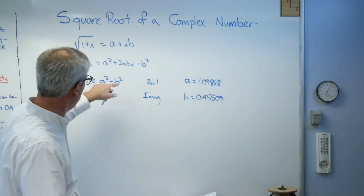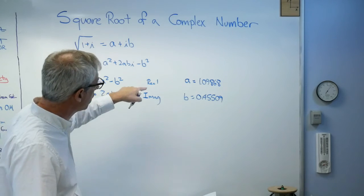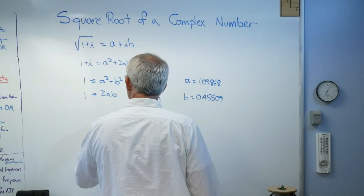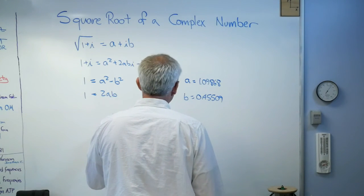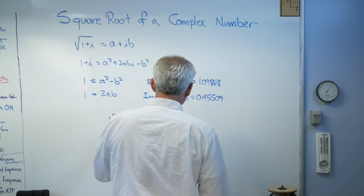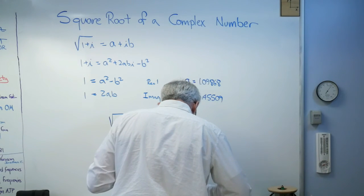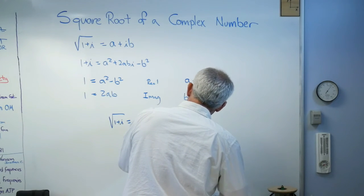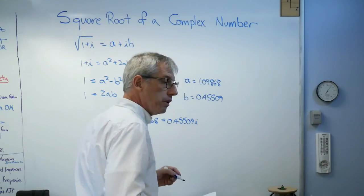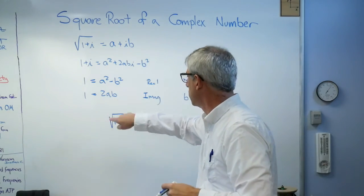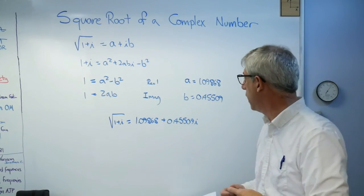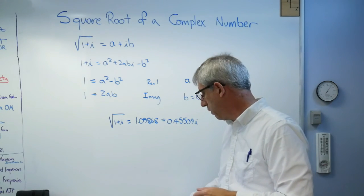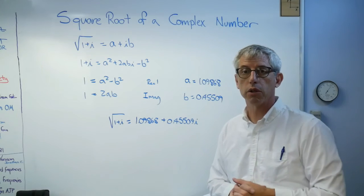If you run through this little simple calculation, those are the two values of a and b that make this work. So what you're going to find out is that the square root of 1 plus i equals 1.09868 plus 0.45509i. So there you go. There's the square root of 1 plus i. And again, that can be negative and that can be negative. As long as they're both negative, you'll still get that. It'll still work out. So be careful when you take your square roots there.